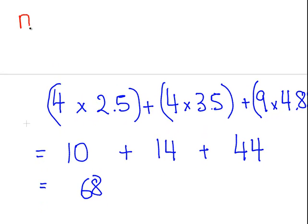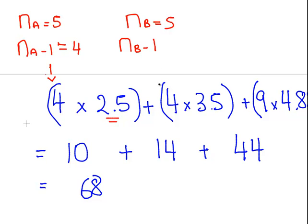So I have it done here. So the sample size for A is 5. N_A minus 1 is equal to 4. So we get this 4 here. The variance we worked out earlier on. It was 2.5. Likewise, the sample size for B is 5. So the N_B minus 1 is also equal to 4. So we get that 4 there as well. And the sample size for C is 10. So 10 minus 1 is 9.